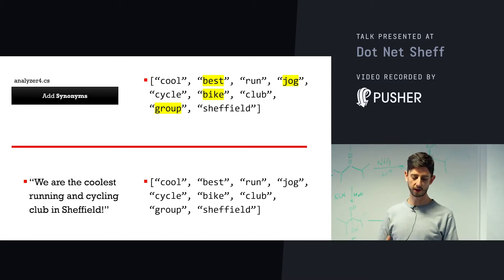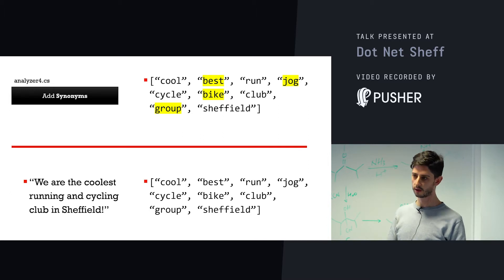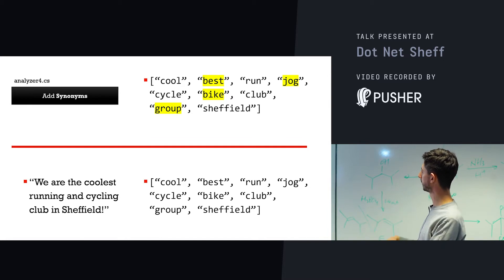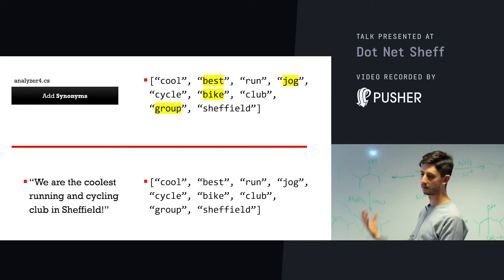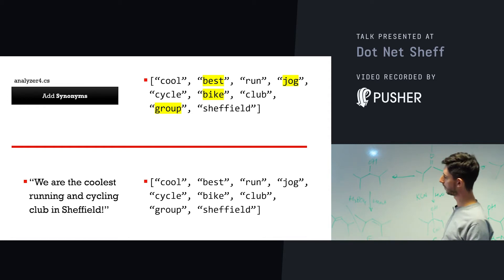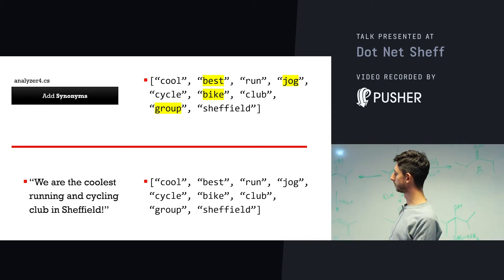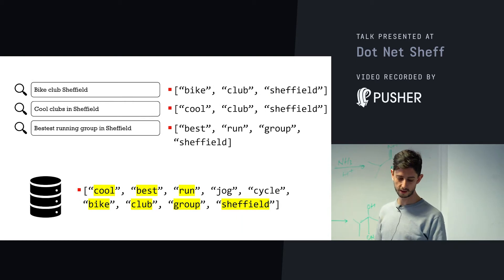A really important one is synonyms. I might say 'cool', you say 'best'; I might say 'running', you might say 'jogging' — and we know they mean the same thing. We can build an analyzer that adds synonyms into the list of words found in a document. So when we index and add a document to the search database, we insert synonyms, meaning I might search 'cool jogging club' and you might search 'best jogging club' and both would match. So what we started with — 'We are the coolest running and cycling club in Sheffield' — produces terms like: cool, best, run, jog, cycle, bike, club, group, Sheffield. It doesn't sound like the original, but this is what our analyzers have extracted, giving us a much more robust set of terms.